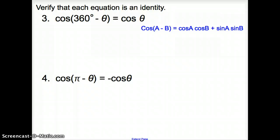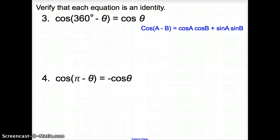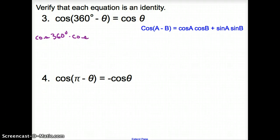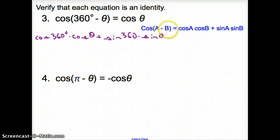Let's try a couple more. Everybody's favorite — we are going to verify that each equation is an identity. With this cosine, we are subtracting, so we are going to use the difference identity of cosine, which is given to us right here. Working with this, let's see if we can come up with cosine theta. I'm going to take that cosine and distribute it to everything inside. So it's going to be the cosine of 360 degrees times cosine of theta — we do not know what theta is, so we can't touch that — plus sine of 360 degrees times sine of theta. That's going to equal cosine theta.